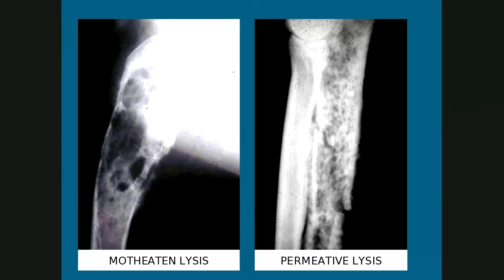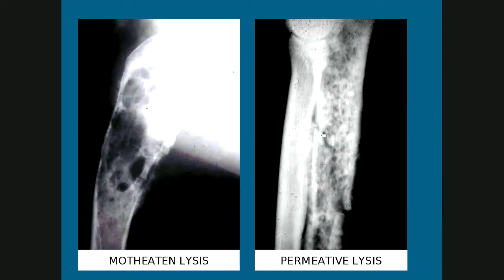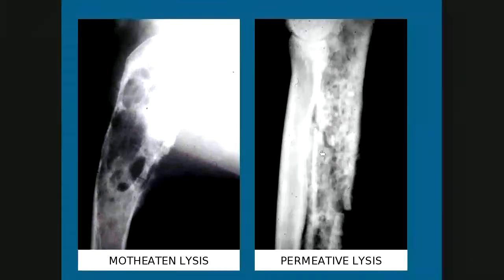These two examples of lysis demonstrate the difference between them. Moth-eaten lysis tends to be larger lytic areas that may coalesce to form even larger ones, versus permeative lysis which is multiple small punctate lytic lesions. On the left-hand image there is also endosteal scalloping, where cortical erosion comes from within the medulla rather than subperiosteally as in osteomyelitis. The image on the right also demonstrates a pathological fracture occurring because the bone is weakened. In neither case is there much periosteal reaction, so both are classified as osteolytic osteosarcoma. Osteomyelitis, by contrast, tends to be more blastic with more new bone formation and periosteal reaction, and does not have endosteal scalloping.